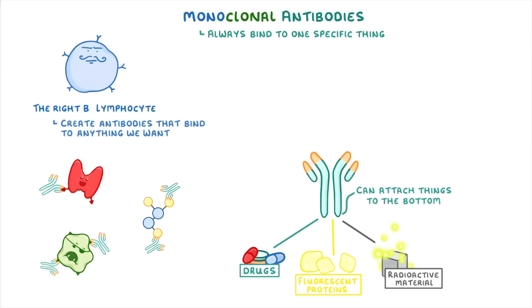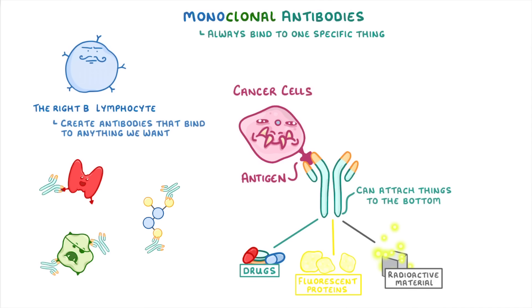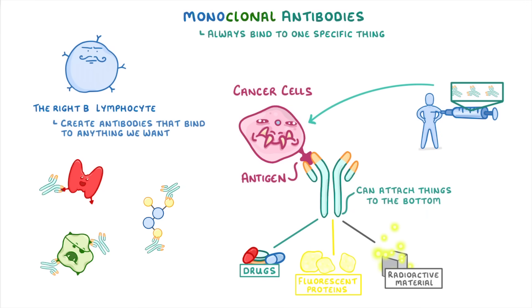For example, if we had some monoclonal antibodies that were specific to an antigen on cancer cells, then we could locate and destroy the cancer by attaching drugs or radioactive material onto the monoclonal antibodies, and then injecting them into the patient, where they'd find their way to the cancer cells and destroy them.